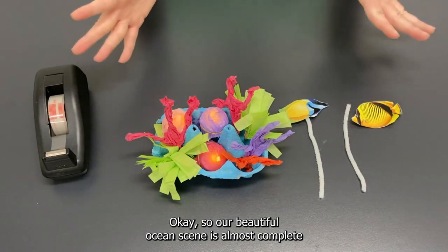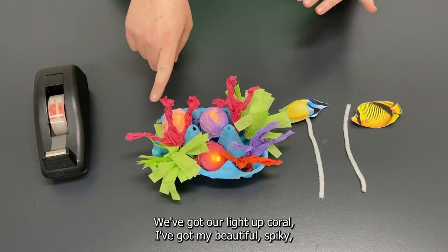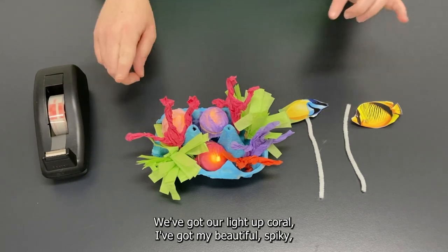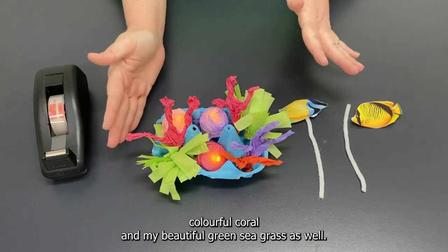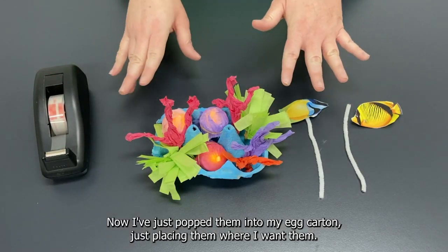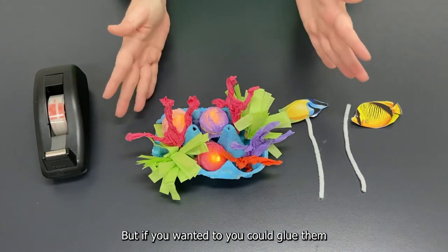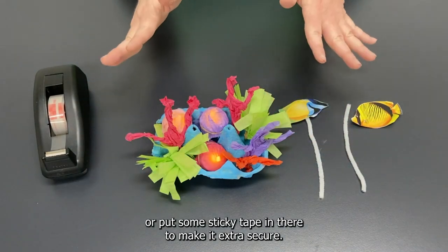Okay so our beautiful ocean scene is almost complete and it's looking pretty good here. We've got our light up coral, I've got my beautiful spiky colorful coral and my beautiful green seagrass as well. Now I've just popped them into my egg carton. I'm just placing them where I want them but if you wanted to you could glue them or put some sticky tape in there to make it extra secure.